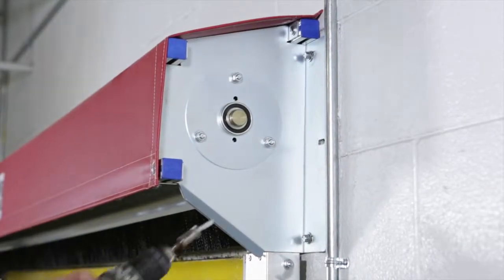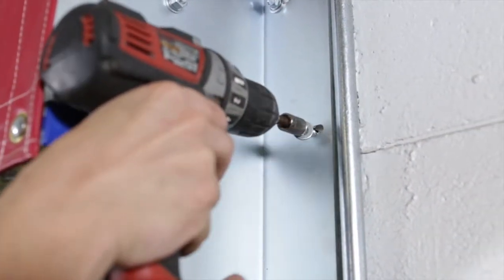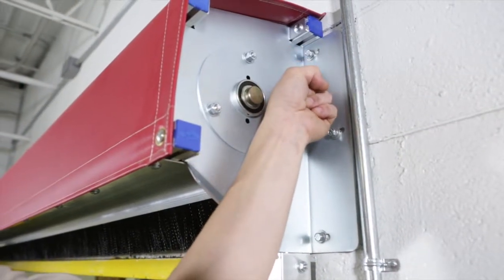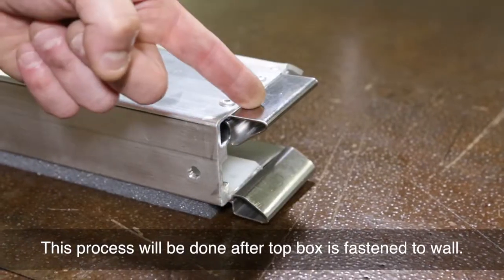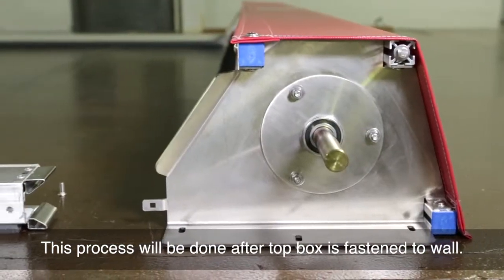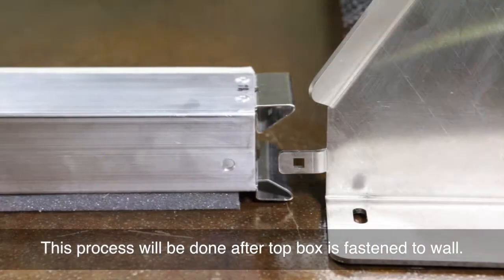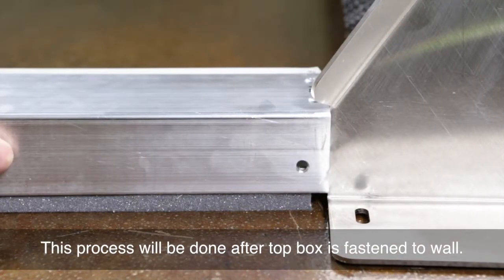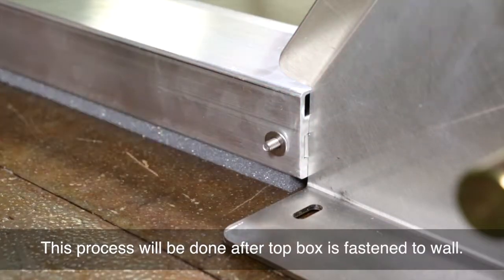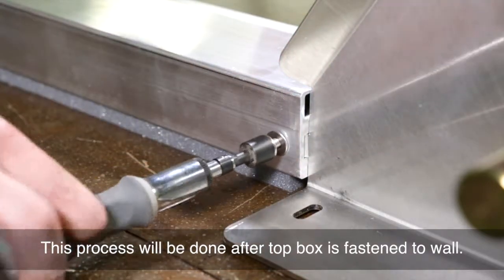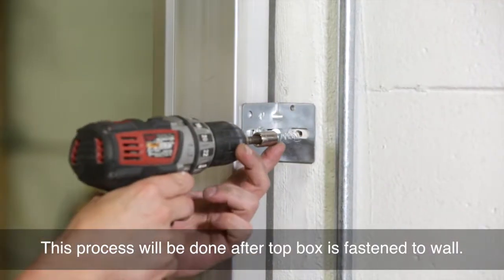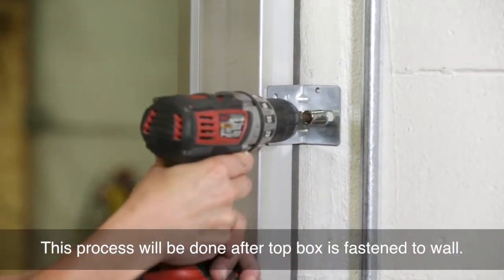Start by mounting the upper box to the face of your building, just above the door's opening. Make sure that the upper box is level and centered. Next, mount the vertical extrusions by first securing them to the side brackets on the upper box section, and then securing them to the building's fascia with the J brackets.